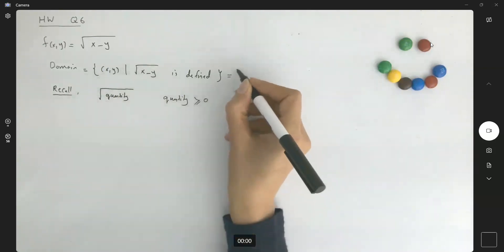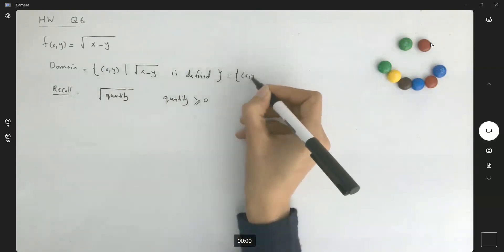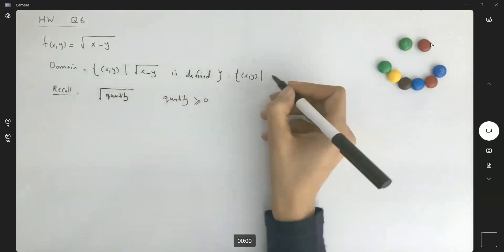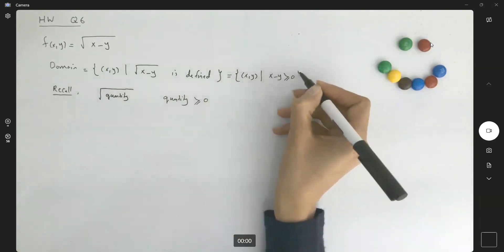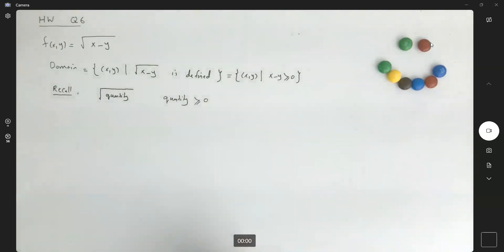In this case, we have to have all x and y's such that x minus y is larger than or equal to zero.